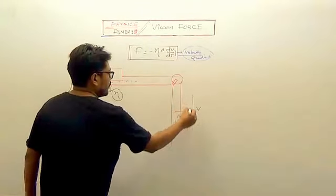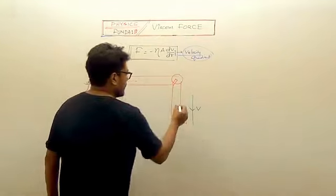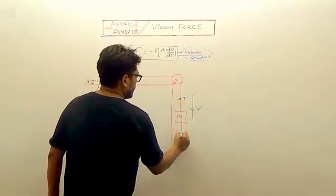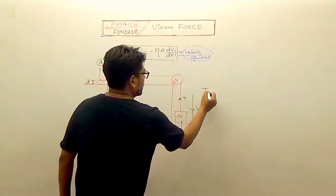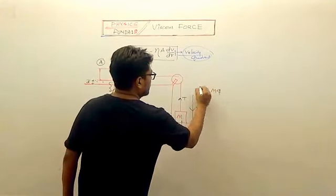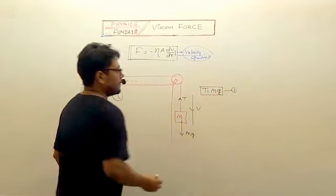From constant velocity, the tension will be T and this is Mg. What is the net force? Zero, because the velocity remains constant. What is acceleration? Zero. What is T? Mg.